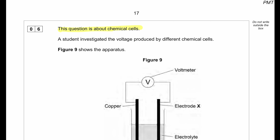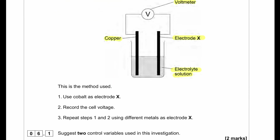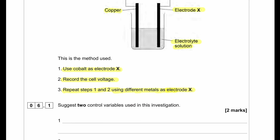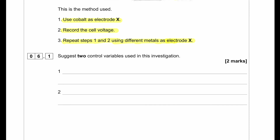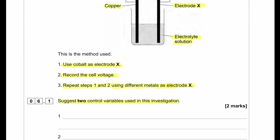This question is about chemical cells. A student investigated the voltage produced by different chemical cells. Figure 9 shows the apparatus — we can see a voltmeter, electrode X, copper, and an electrolyte solution. The electrodes are made from copper and there is an electrode X. The student used cobalt as electrode X to record the cell voltage, then repeated with different metals as electrode X. A control variable for this investigation should be the volume and concentration of the electrolyte solution.